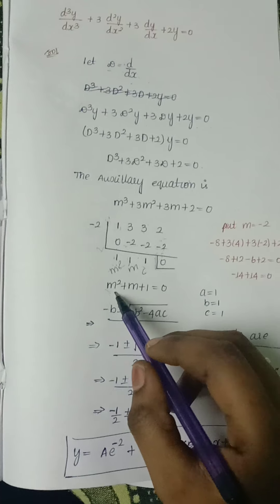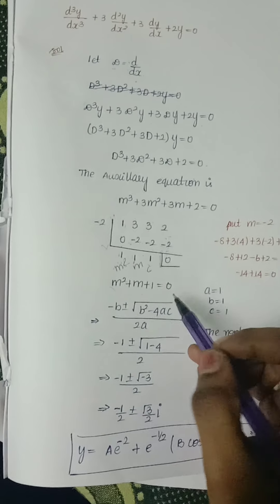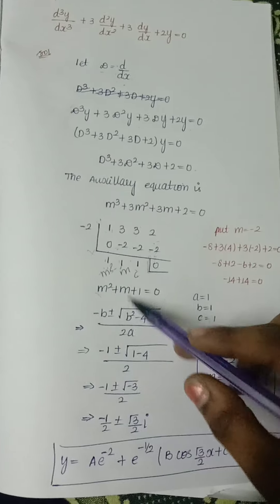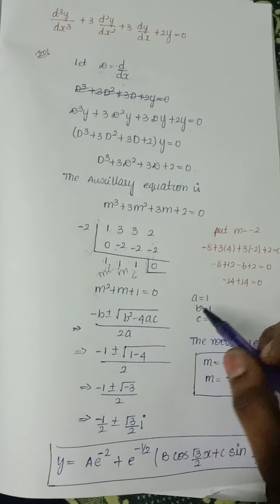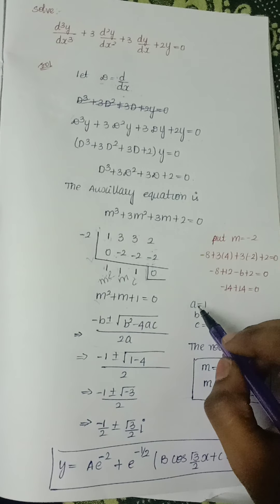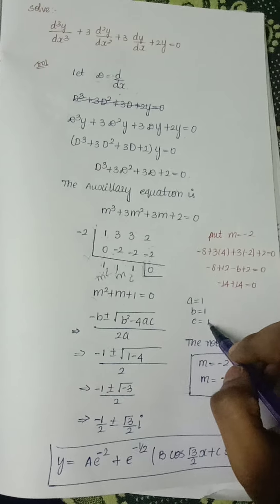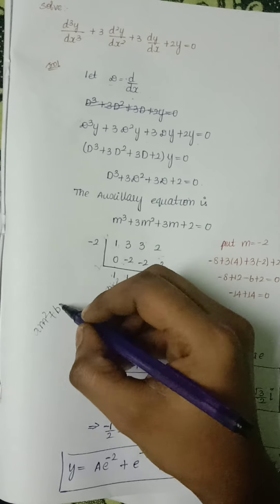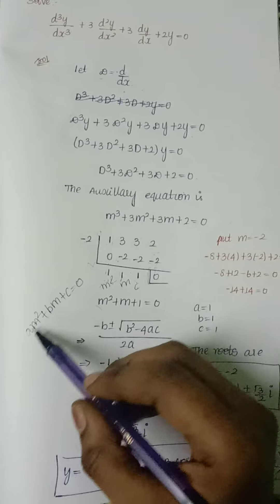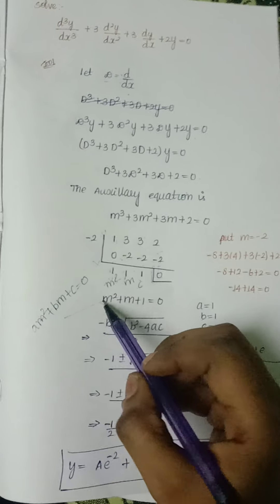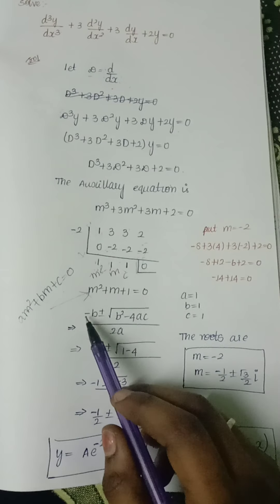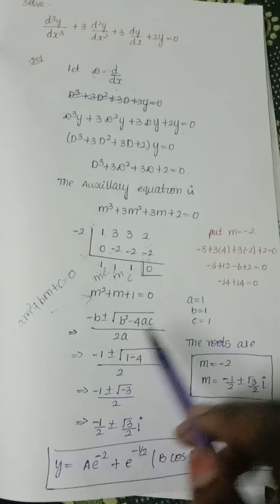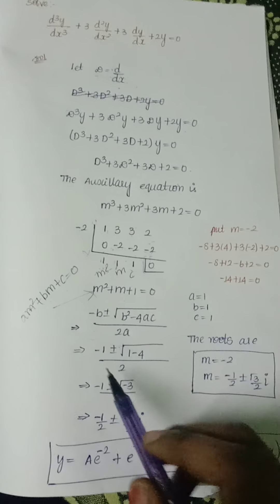The resulting quotient is m² + m + 1 = 0. This cannot be factored by standard factorization, so we use the quadratic formula. With a = 1, b = 1, c = 1, the formula is m = (-b ± √(b² - 4ac)) / 2a, giving m = (-1 ± √(1 - 4)) / 2.